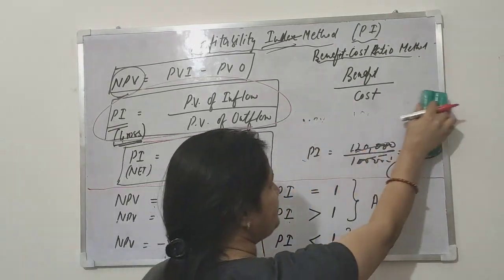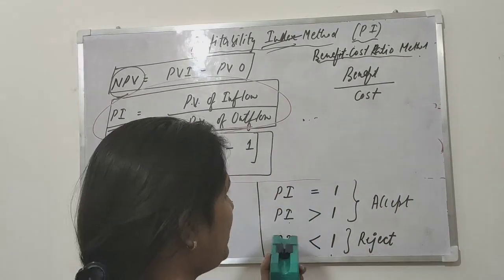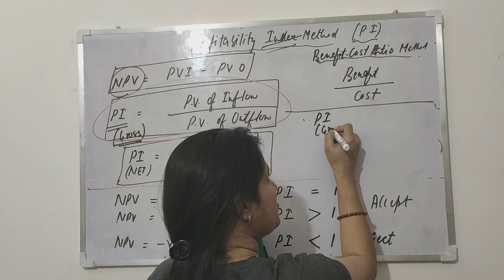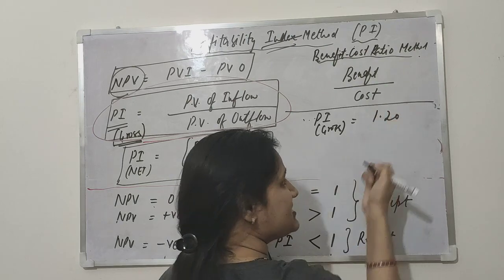In this sum that we did, my answer is, for example, PI gross which I calculated - if you have to calculate both gross and net, gross is one point twenty.